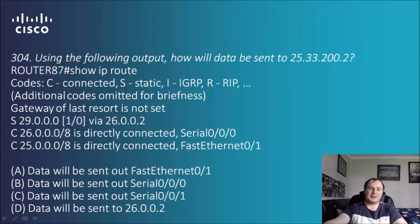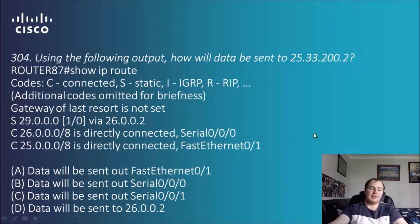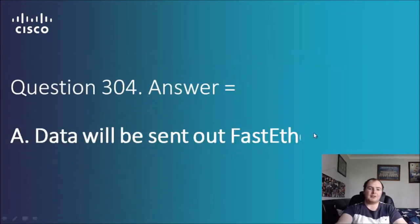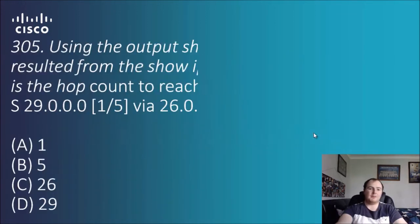Question 304: we've got another lot of output — how will data be sent to 25.33.20.2? Looking at where 25 appears in the connected networks section of the output, it gives us the answer: A — data will be sent out fast ethernet zero/one.